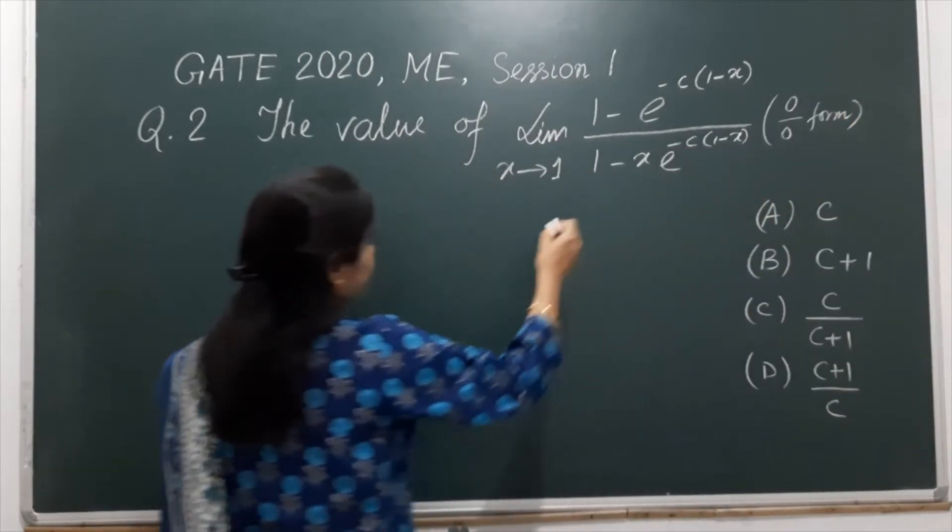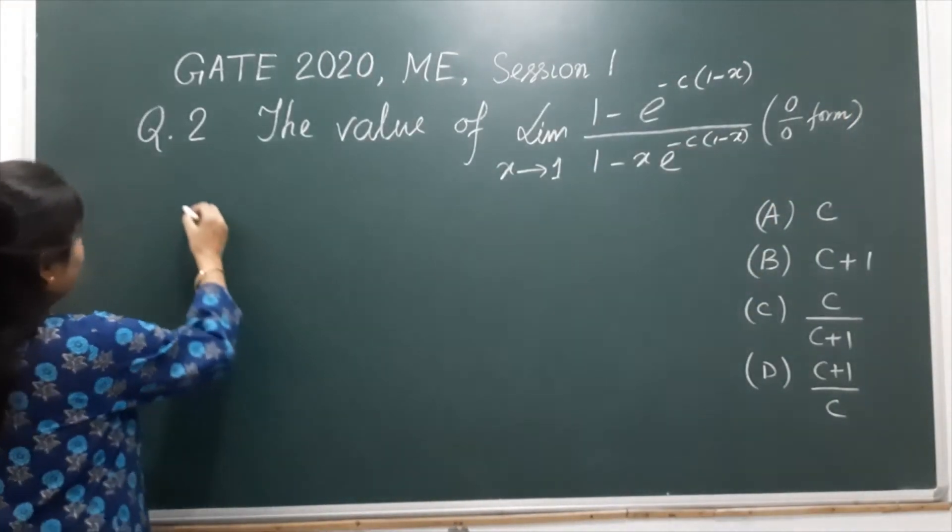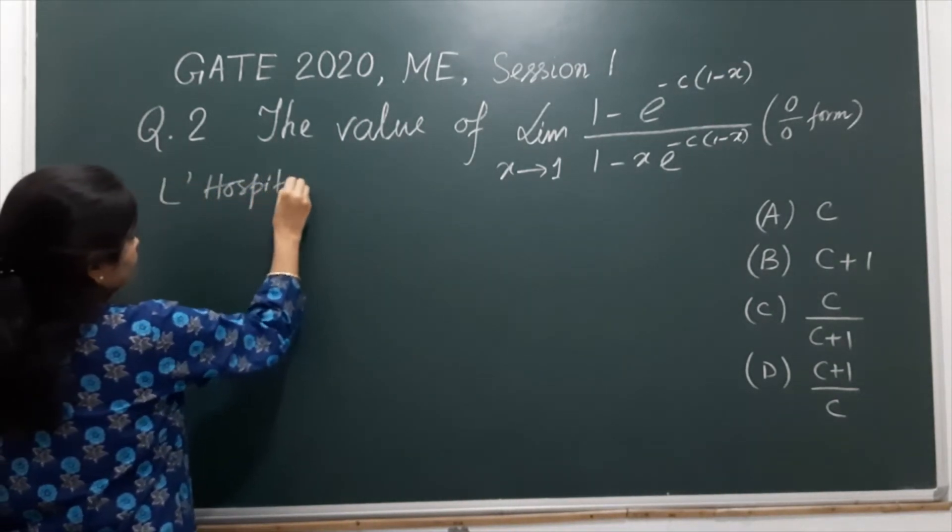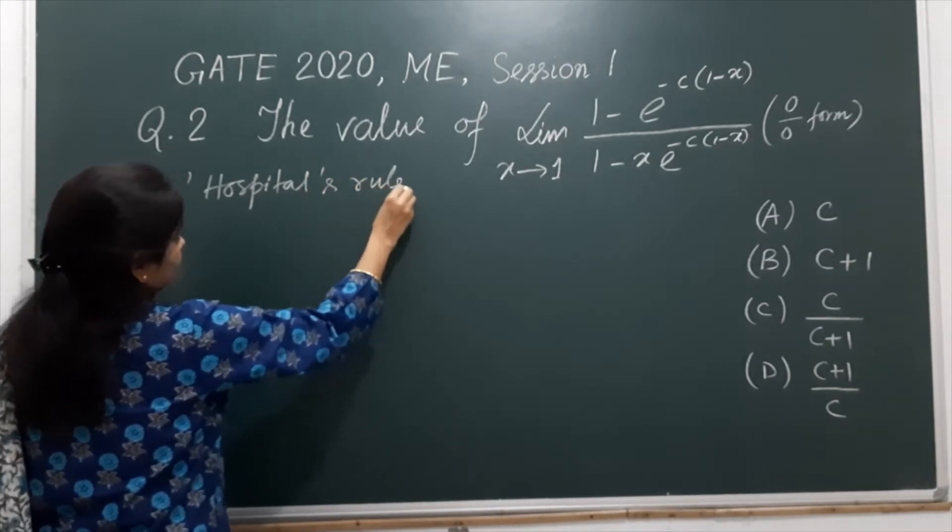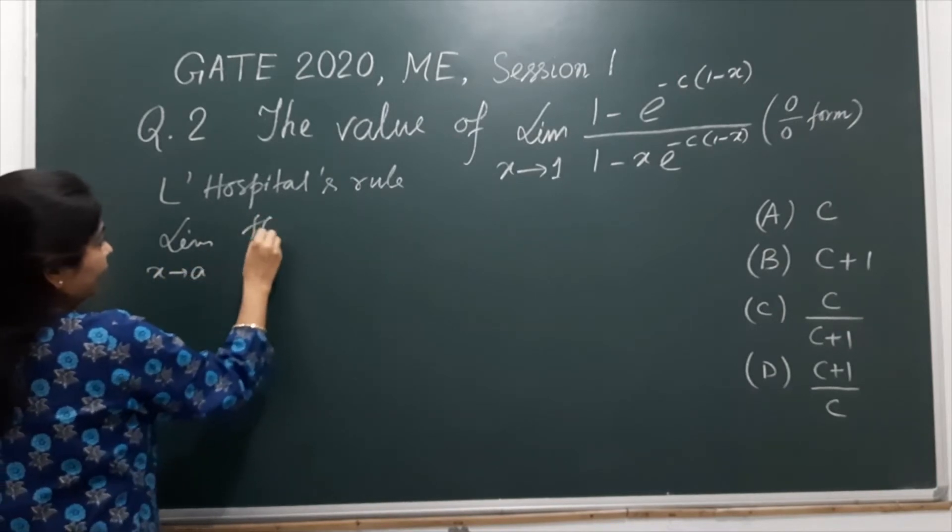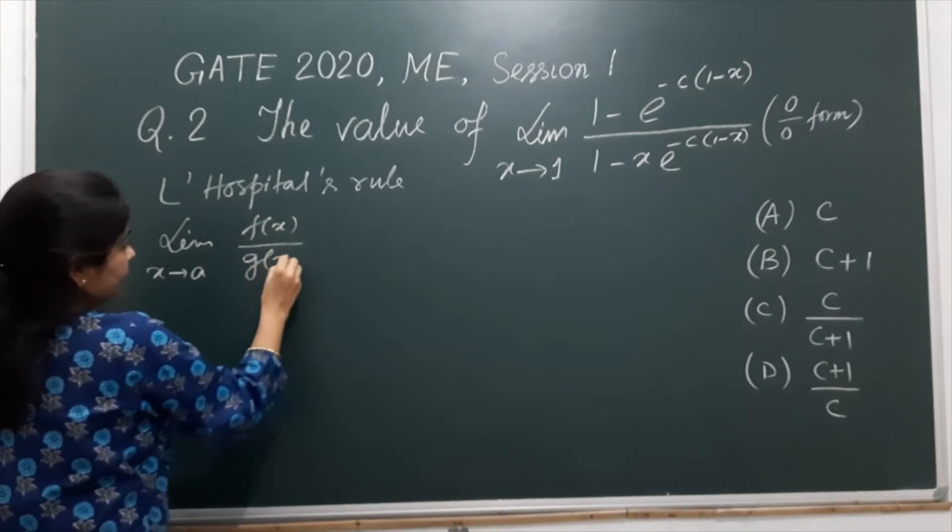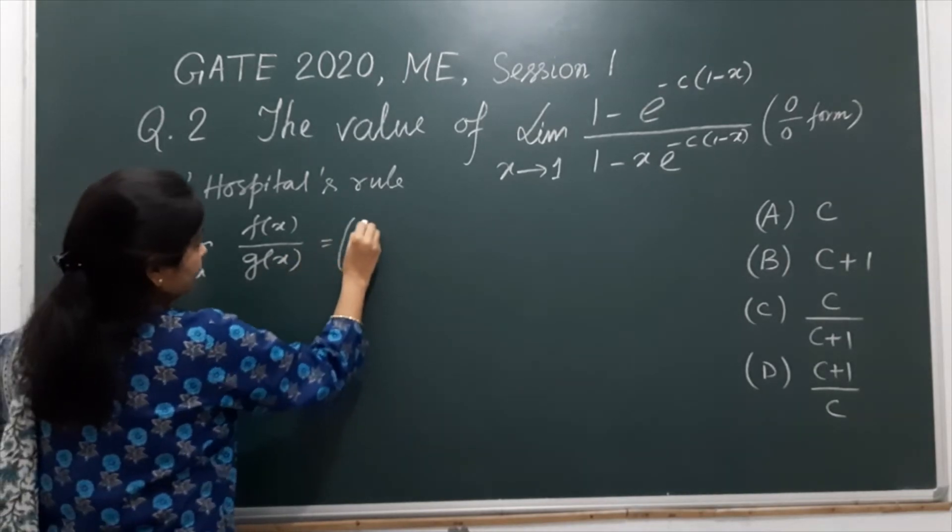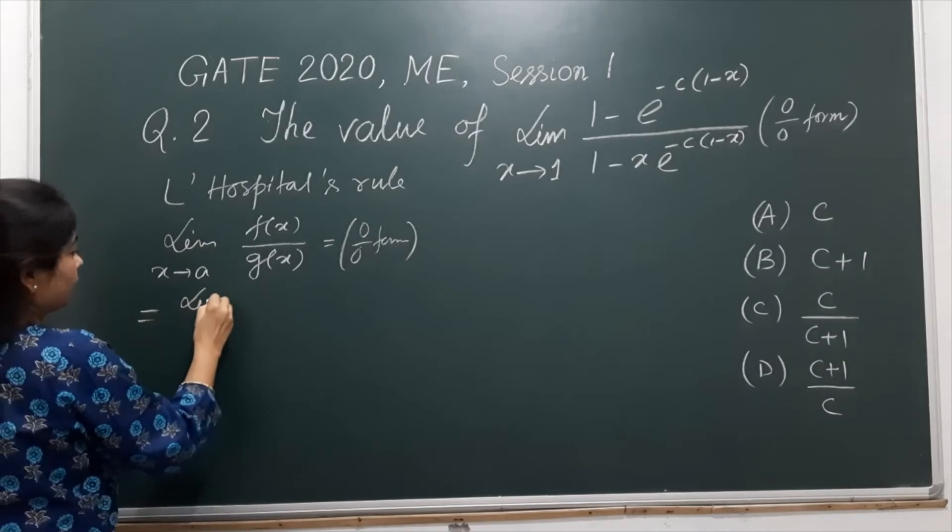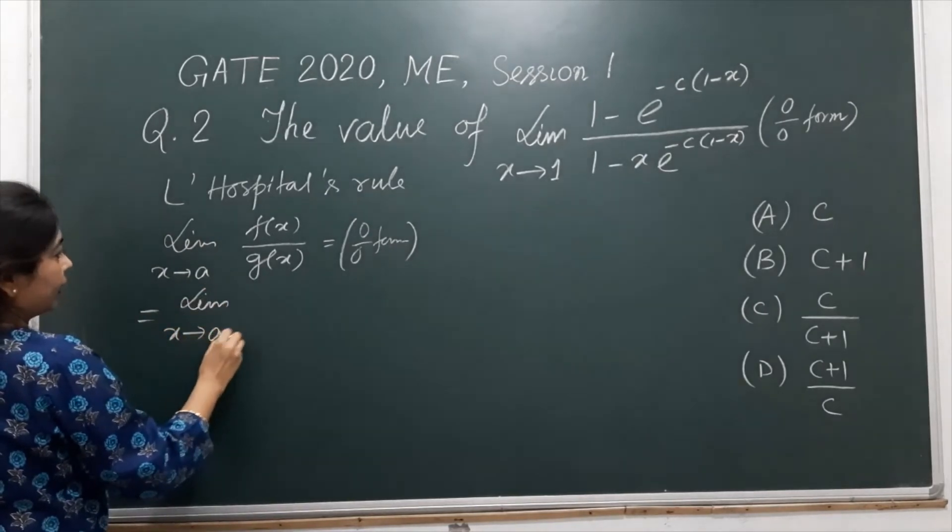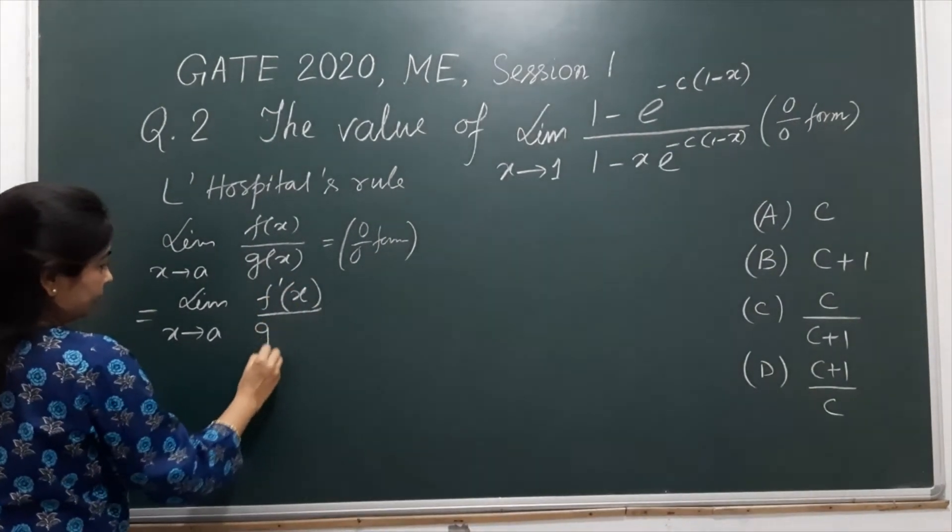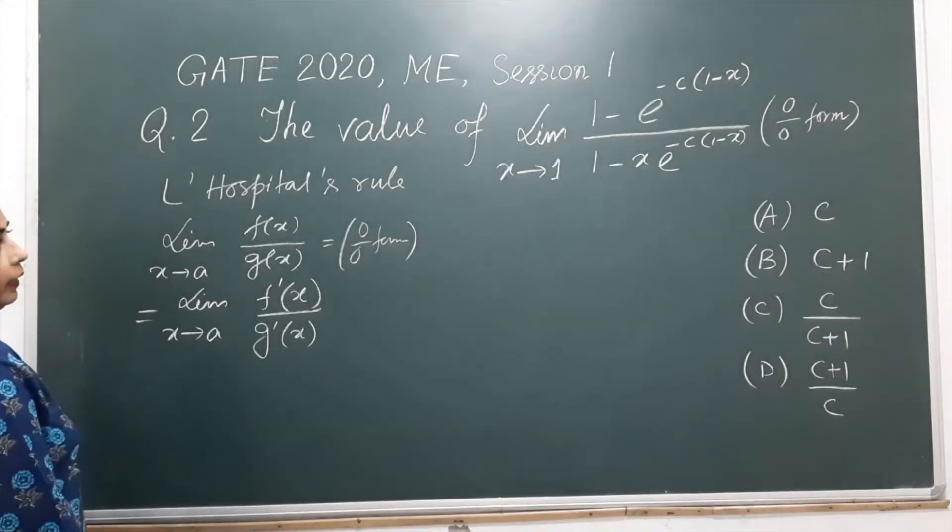So here we have to apply L'Hospital's rule. L'Hospital's rule is limit x tends to a, f(x) by g(x), if it is of 0 by 0 form then this is equal to limit x tends to a, f'(x) by g'(x). Okay.